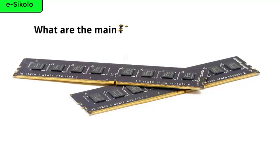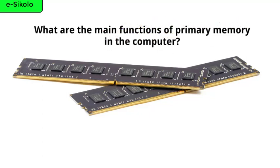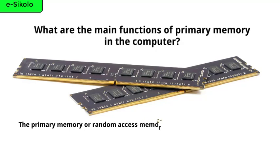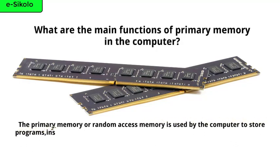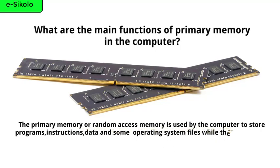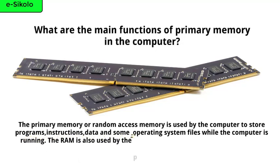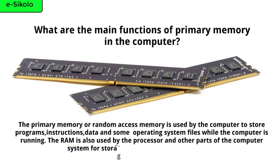What are the main functions of primary memory in the computer? The primary memory is used by the computer to store programs, instructions, data, and some operating system files while the computer is running. The RAM is also used by the processor and other parts of the computer system for storage of data as the computer runs.